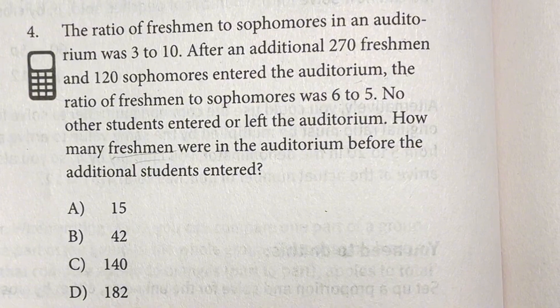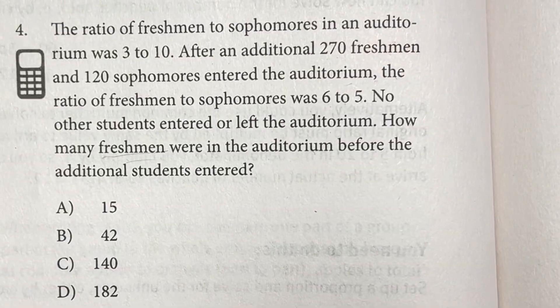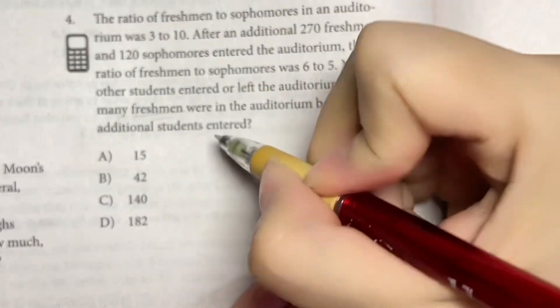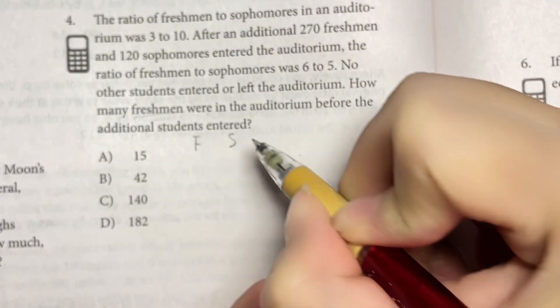So how can we set up this ratio question? First, we let F be freshmen, then S be sophomores, right?